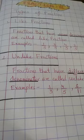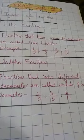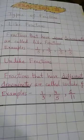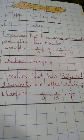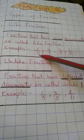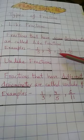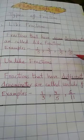First are like fractions. Fractions that have the same denominators are called like fractions. Look at the denominators — all are same. So 1 upon 5, 3 upon 5, 4 upon 5, and 2 upon 5 — they are like fractions.